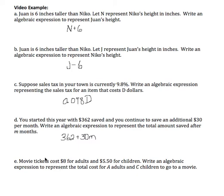And part E, movie tickets cost $8 for adults and $5.50 for children. Write an algebraic expression to represent the total cost for A number of adults and C number of children to go to a movie. Well, for every adult, it's $8 times however many adults, so that's 8A. Plus, for every child, it's $5.50 times the number of children. So we're going to add those two together, and that's going to give us the total cost for A number of adults and C number of children.